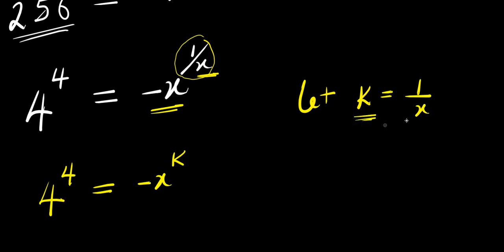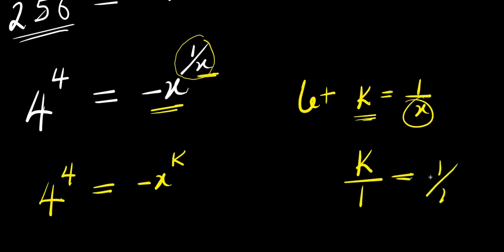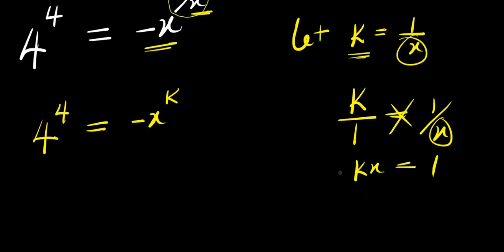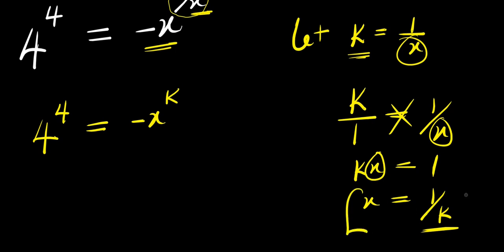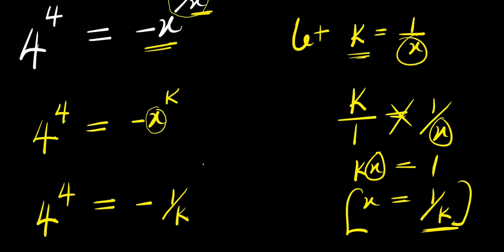From here I will isolate x by cross-multiplying. I have k over 1 equals 1 over x. I cross-multiply: x times k, that is kx equals 1. From here I can isolate x by saying x equals 1 over k — that is dividing each part of this equation by k, so this is my x. That means I'm going to replace this x here with 1 over k. I have 4 power 4 equals negative 1 over k raised to the power of k.